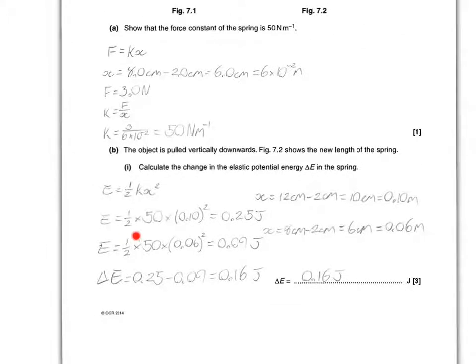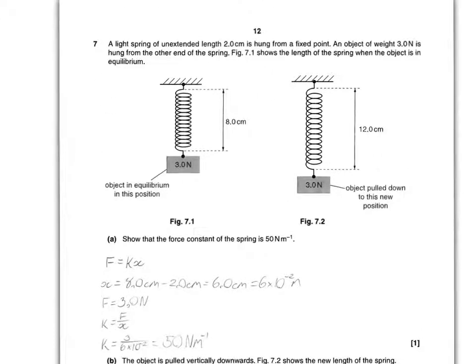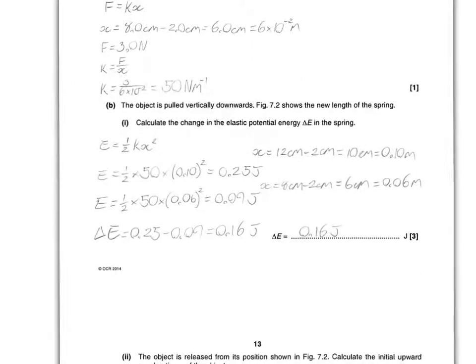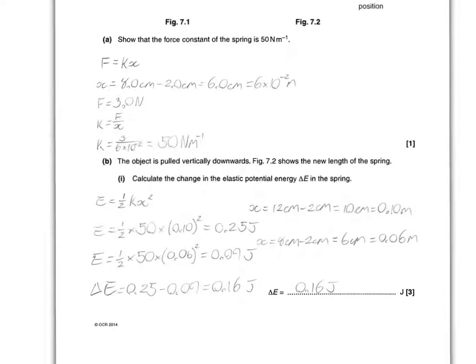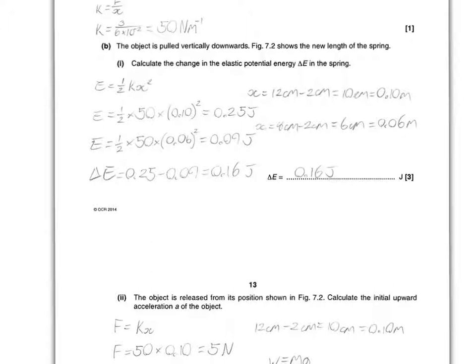Half times 50, which is K, times X squared. 0.10, because it's 10 centimetres, 12 minus 2 equals 10, and you see a centimetre, so you want to get into metres, so 0.10 metres. That's squared, is equal to 0.25 joules. We need to do this one now. We go back down, and this is the same as before, so it's 0.06 metres, as done in the previous part of the question, which is there. That will equal, if you sub everything in properly, 0.09 joules.